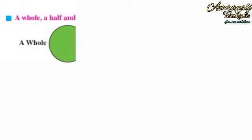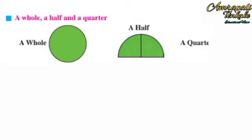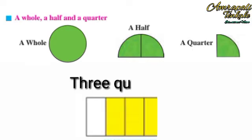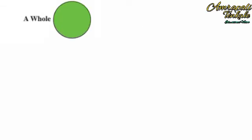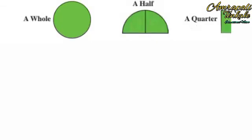In this part we will learn a whole, a half, and a quarter — purna, ardha, aani pao bhaag. Three quarters means paan bhaag. Let's see the pictures: a whole, a half, a quarter — purna, ardha, aani pao.